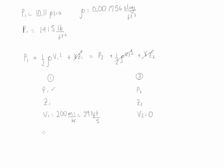Therefore if we solve for P2 we find P2 is simply going to be P1 plus one half rho V1 squared.